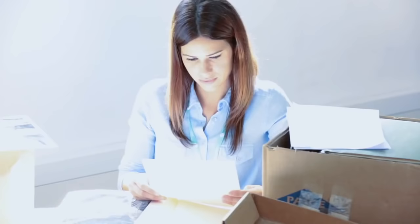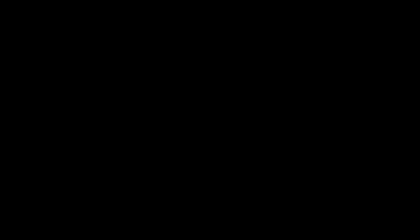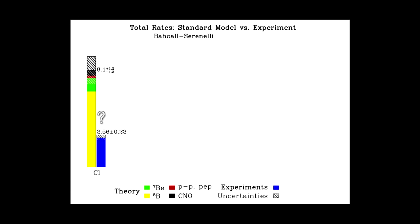The Homestake experiment started to work in 1968. And it was an extraordinary success. For the first time, neutrinos from the Sun were detected. But the first results observed that the Sun's output of neutrinos was less than expected. In fact, only one-third of those expected from Bahcall's calculations. This discrepancy between the number of predicted neutrinos and the number measured soon became known as the solar neutrino problem.